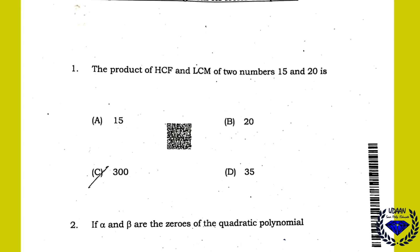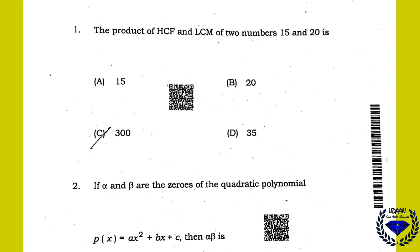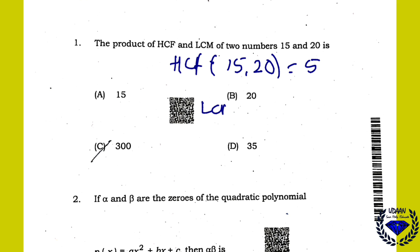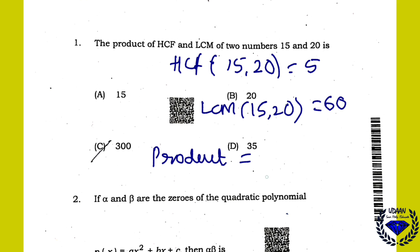The first question is: the product of HCF and LCM of two numbers 15 and 20. The HCF of 15 and 20 is 5, because 5×3=15 and 5×4=20. The LCM of 15 and 20 is 60. So the product of HCF and LCM is 5×60 = 300.